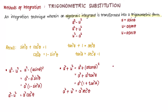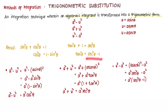For the third pattern, u squared minus a squared: we let u be equal to a secant of theta. Substituting, a secant theta quantity squared minus a squared gives a squared secant squared theta minus a squared. Factoring out a squared, we have secant squared theta minus 1. From the identity, secant squared theta minus 1 equals tangent squared theta. Therefore, u squared minus a squared equals a squared tangent squared theta. We use these relationships according to these patterns in the algebraic integrand.